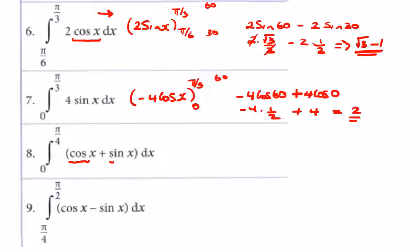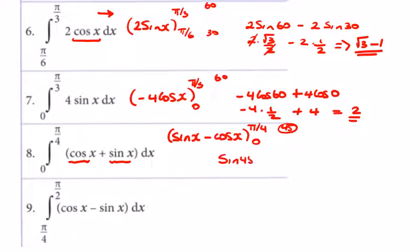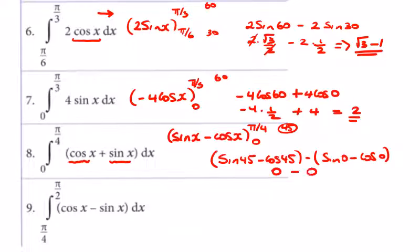We need to integrate cos x and sin x together this time. Cos goes to sin x and sin x goes to minus cos x, evaluated between π/4 (45°) and 0. We get the sin of 45 minus the cos of 45 — they're both the same, so that gives 0 — minus the sin of 0 minus the cos of 0. That's 0 minus 0, and then minus by the minus we get plus the cos of 0, which is 1. So the answer is 1.